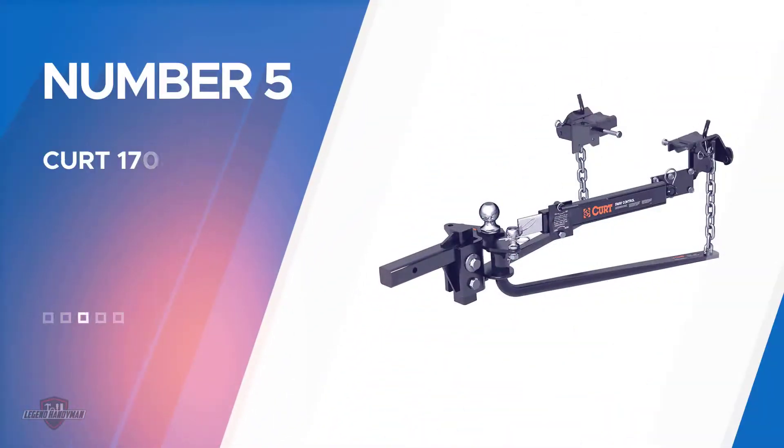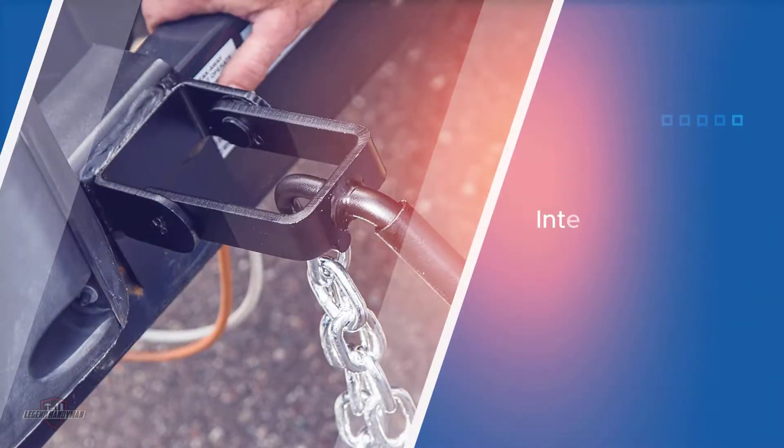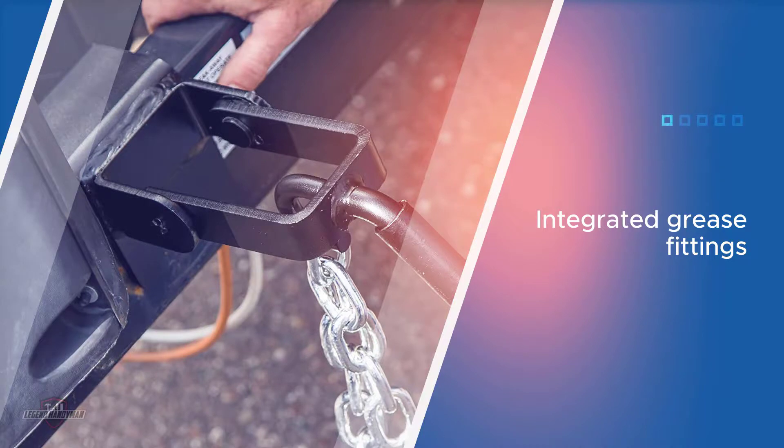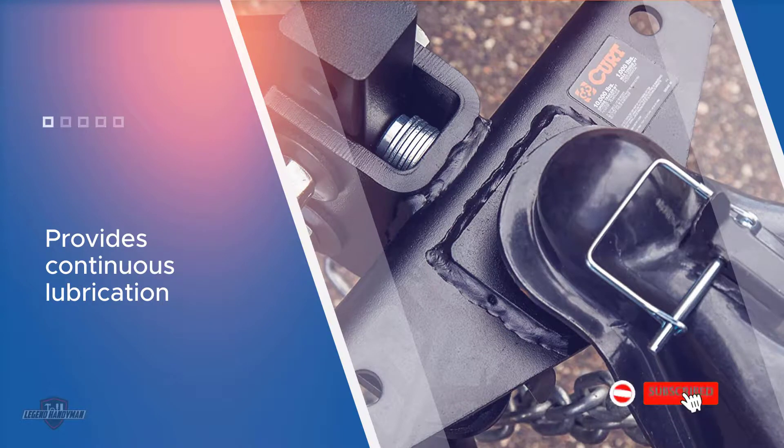Number five: Curt 17063 MegaVoltz weight distribution hitch. If you're in search of a weight distribution hitch with a high gross trailer weight rating, look no further than the Curt 17063 MegaVoltz round bar hitch. This hitch is the best option for anyone that needs to tow a longer trailer, and it has a lot of great features to keep that extra length in line with your towing vehicle.